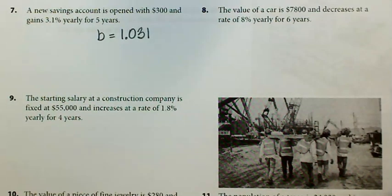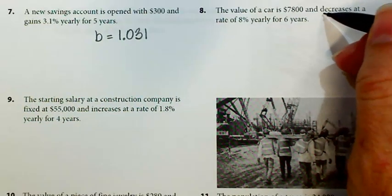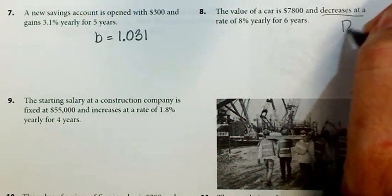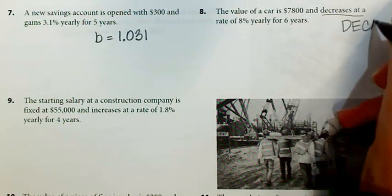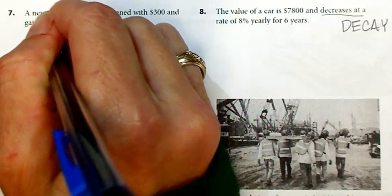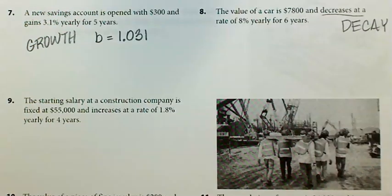Number 8 is the next one that I asked you to do. If you read the word problem, the value of a car is $7,800 and decreases at a rate of 8% yearly for 6 years. Decreases at a certain rate means that this one is a decay function. Again, something's losing value. Over here this is a growth function. By the way, you can have growth functions that don't deal with money. You can have a growth function that deals with like the number of bacteria over time or something like that.